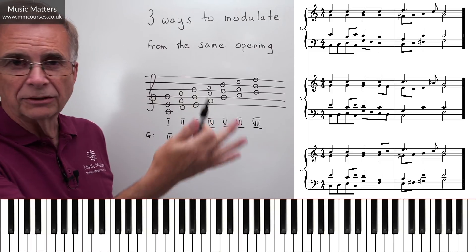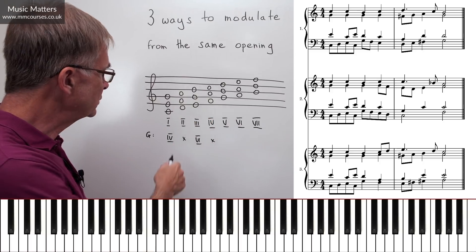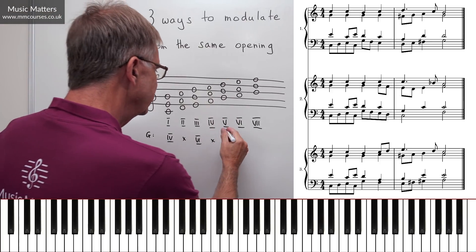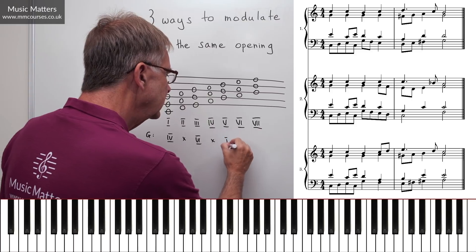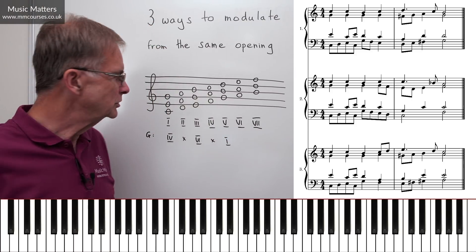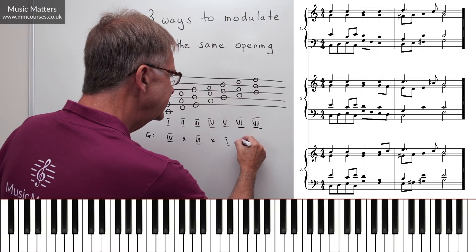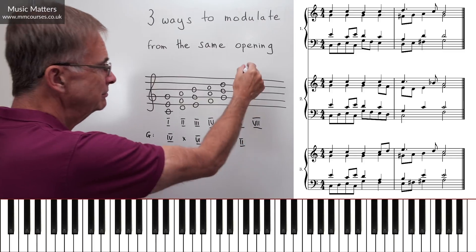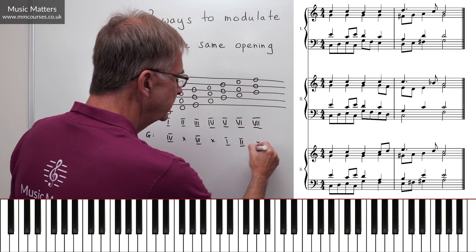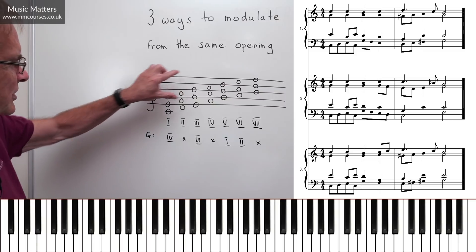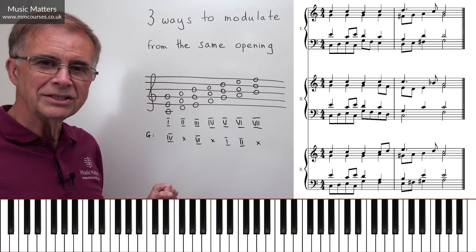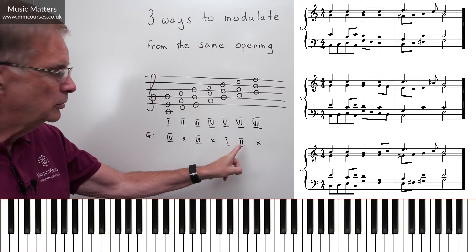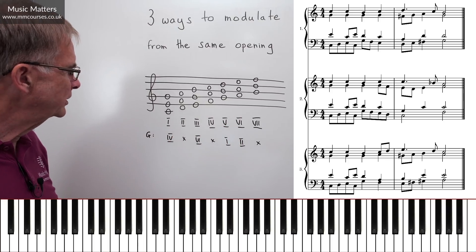Chord V is chord I in G major — that's a possible pivot chord. Chord VI is chord II in G major — also a possible pivot chord. Chord VII has an F natural in it — no good. So if we're in C major and want to modulate to G major, those are the possible pivot chords, and any one of those will do.